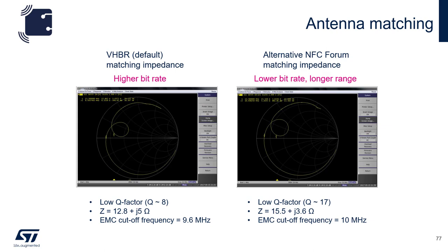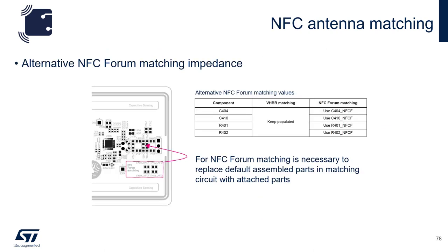In addition, there is also an NFC forum matching impedance included. Here the Q factor is set to 17, the impedance is set to 15.5 ohms, and the EMC cutoff filter is set to 10 megahertz. To implement the NFC antenna matching, simply change the components listed in the table to the new values — essentially replacing the serial capacitor and the damping resistor of the matching network.